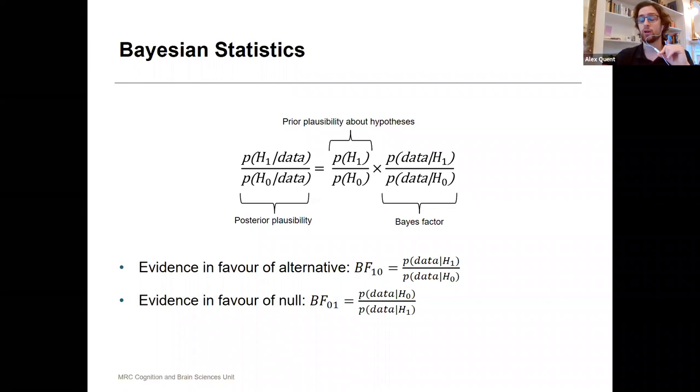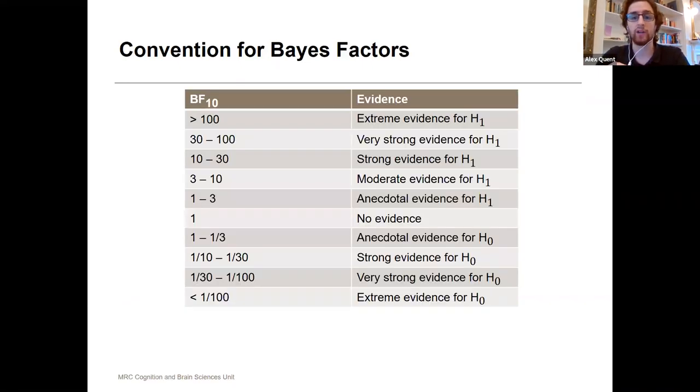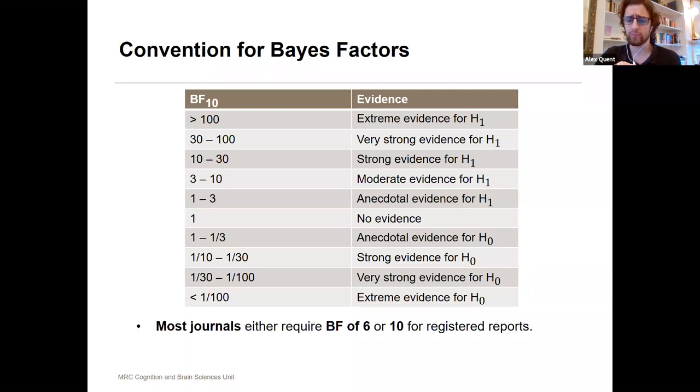Unlike p-values, however, they also have conventions, particularly for how we can interpret Bayes factors. Specifically for registered reports that I'm focusing on here, most journals require you to plan for something that you get a Bayes factor of 6 or 10, depending on where you submit.